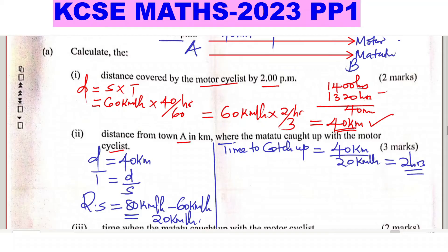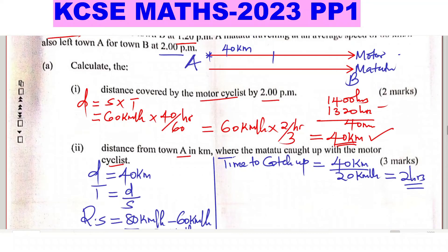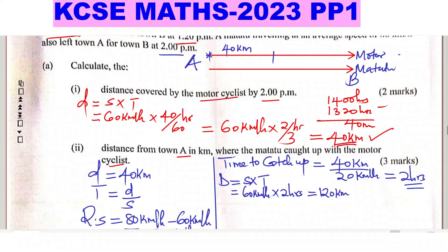The question asks for the distance from town A where the matatu caught up. There are two ways to find this. Method 1: using the motorcycle. Distance = speed × time = 60 km/h × 2 hours = 120 kilometers.